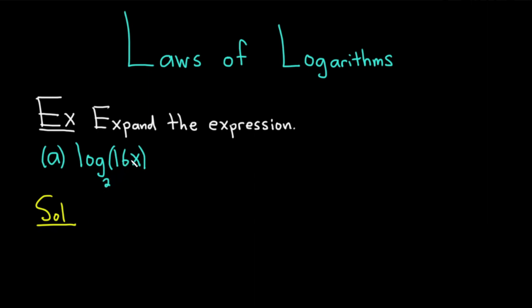So we have a product. We have 16 times x. We're going to use something called the product rule. The product rule says if you have log base b of x times y, that this is the log base b of x plus the log base b of y. This product rule is one of the laws of logarithms.